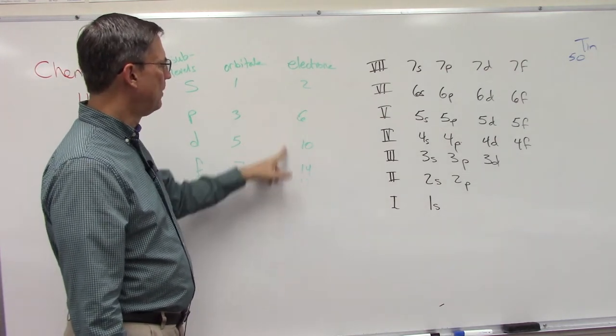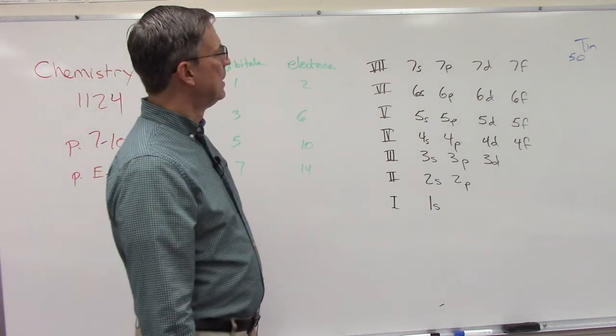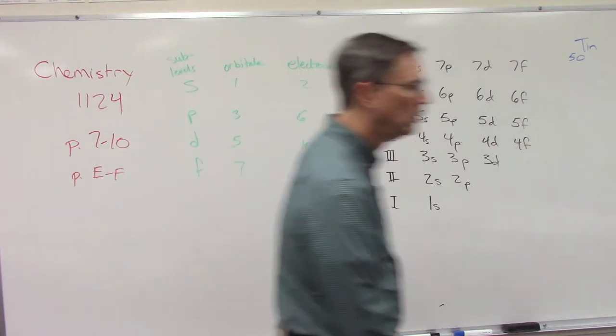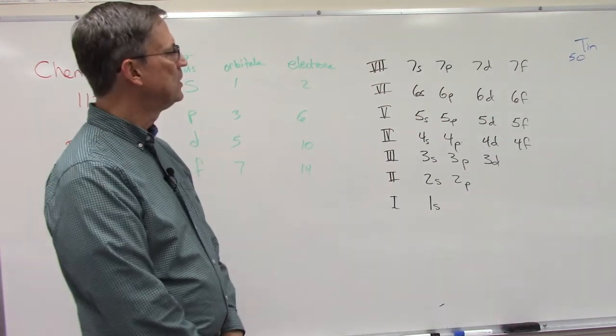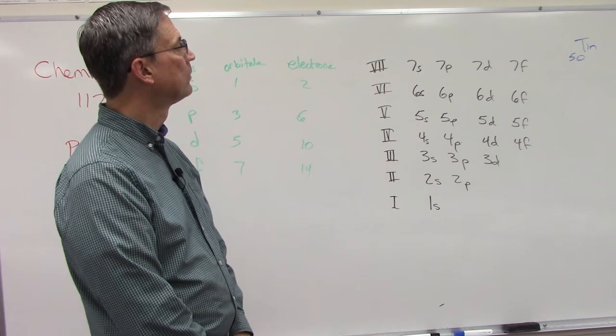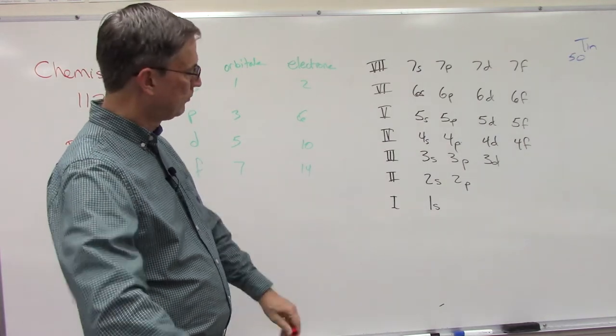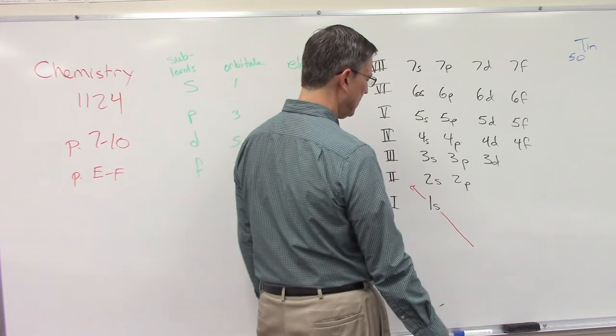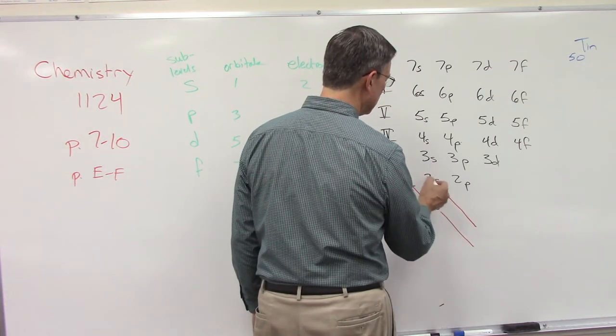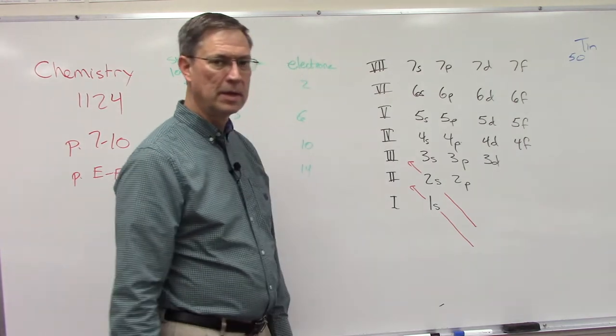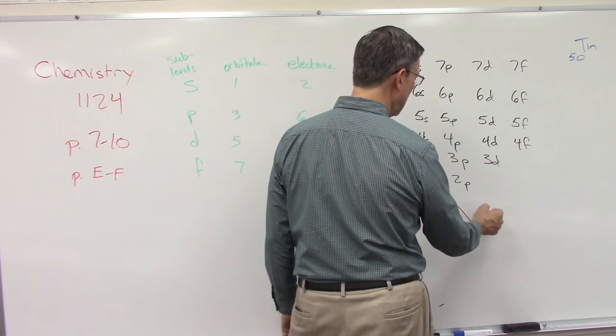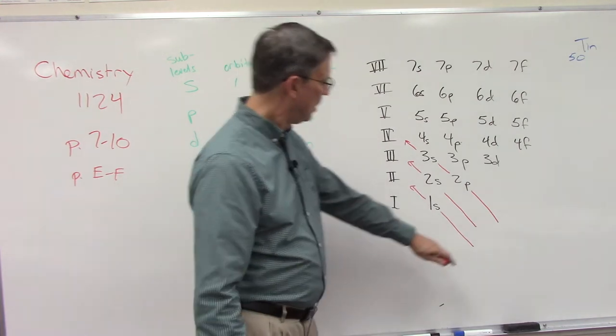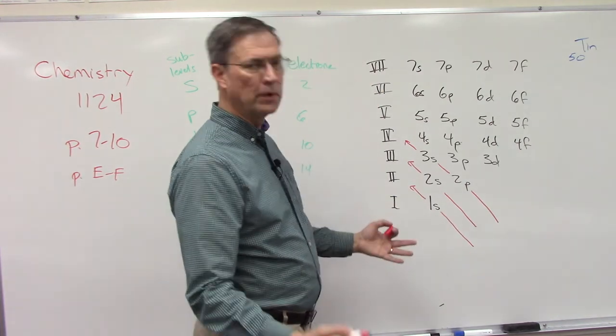Here's another, this is called the diagonal rule. It helps us determine the order in which each of these sub levels fill up. We're going to draw a diagonal that comes up like this, hits the 1s. The next diagonal just hits the 2s. Then the next electrons go into, here's another diagonal coming up into the 2p. After the 2p is full they go to 3s.